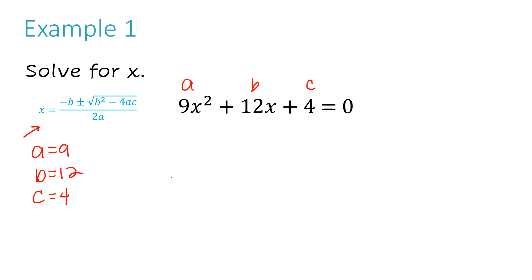I do want to point out that if the sign in front of any of these terms is a minus sign, you need to write down a negative whatever that number is. You can't write it down as positive. So if this plus sign in front of the 12 were a minus sign, instead of writing a positive 12 for my b value, I would have written negative 12. That's very important.